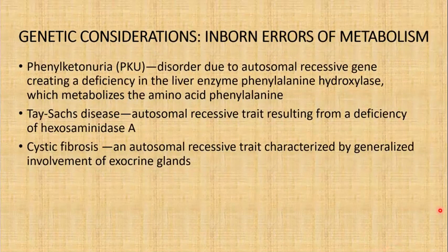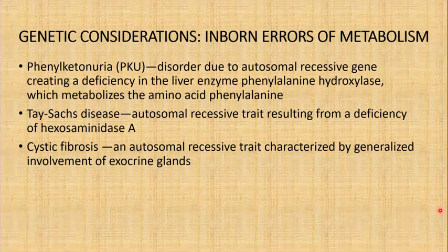We can also consider inborn errors of metabolism. These are conditions that can affect fetal development. Inborn errors of metabolism are disorders of protein, fats, or carbohydrate metabolism due to absent or defective enzyme that generally follows a recessive pattern of inheritance. For example, phenylketonuria or PKU is a disorder due to an autosomal recessive gene that creates a deficiency in the liver enzyme phenylalanine hydroxylase, which metabolizes the amino acid phenylalanine. If this is deficient, metabolites accumulate in the blood and become toxic to brain cells.